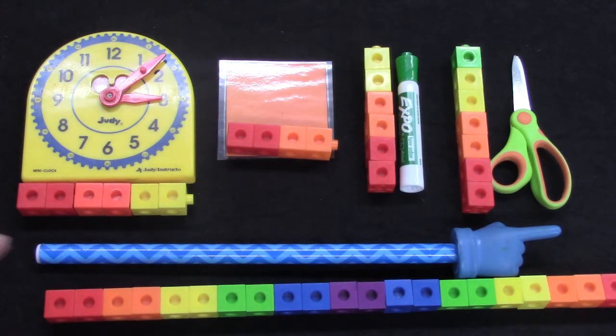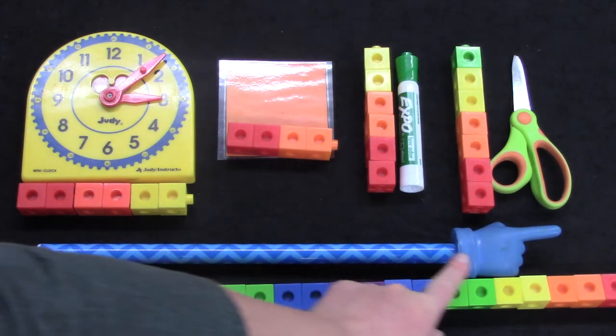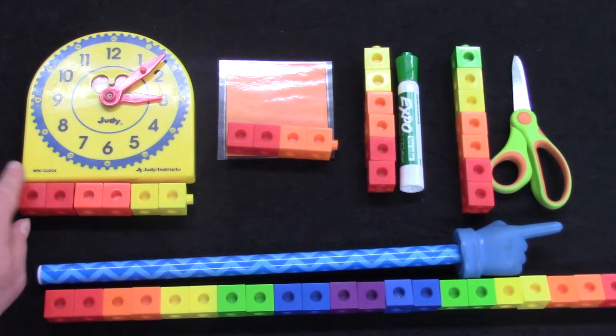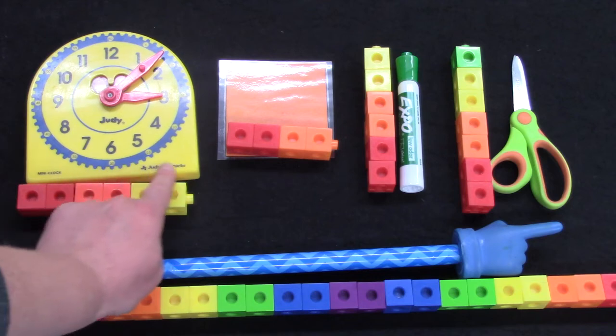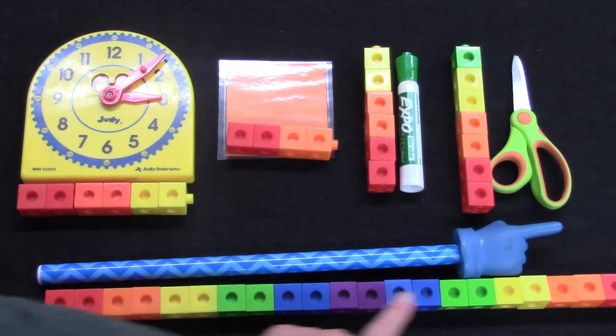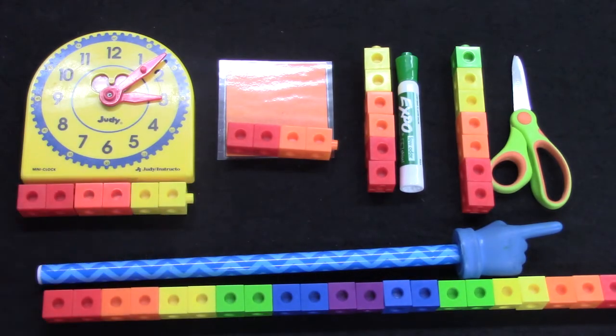When we measure how long something is, we say we're measuring the length. And if we measure how wide something is, we say we're measuring its width. Let's measure length and width today.